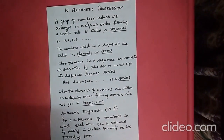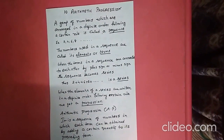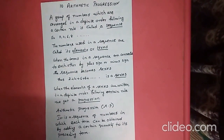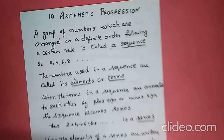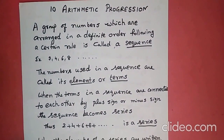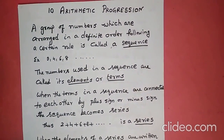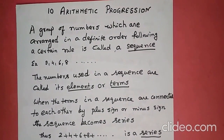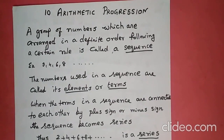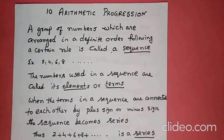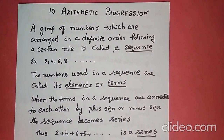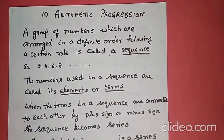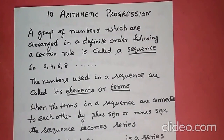Hello children, today I am going to teach chapter 10: Arithmetic Progression. First you should know what is a sequence. A group of numbers arranged in a definite order following a certain rule is called a sequence. Example: 2, 4, 6, 8. The numbers used in a sequence are called its elements or terms. When terms are connected by a plus or minus sign, the sequence becomes a series. When elements of a series are written in a definite order following a certain rule, we get a progression.